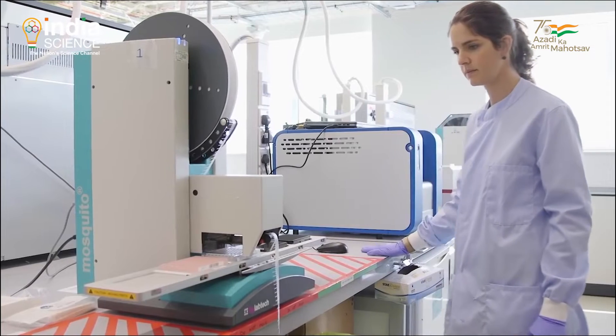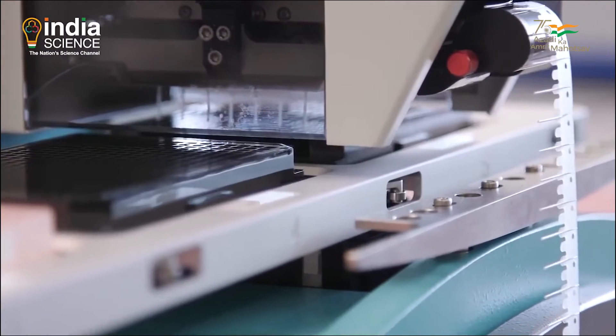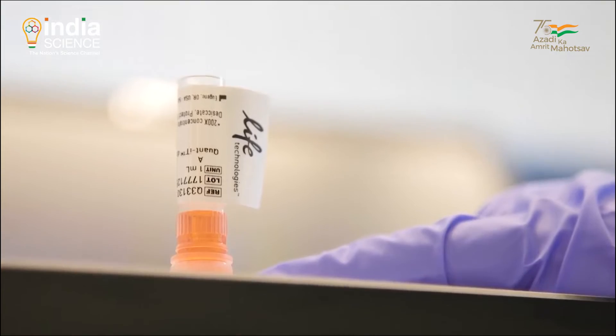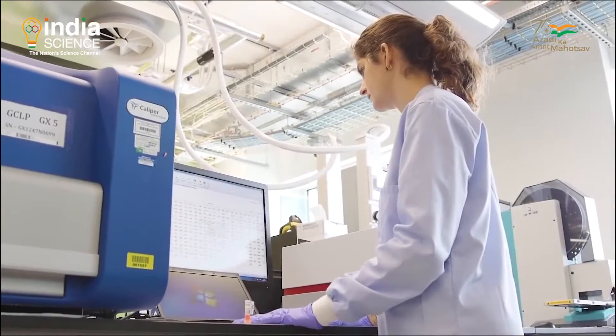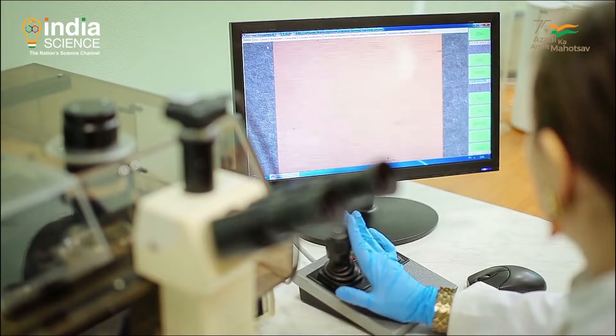Beginning on October 1, 1990 and completed in April 2003, the HGP gave us the ability for the first time to read nature's complete genetic blueprint for building a human being.